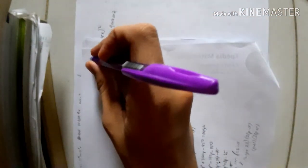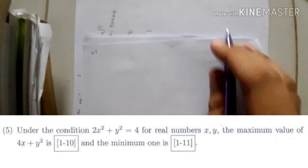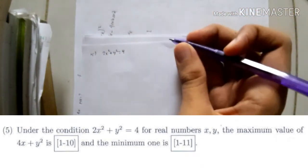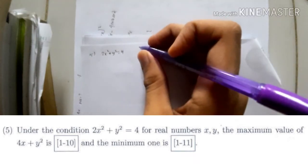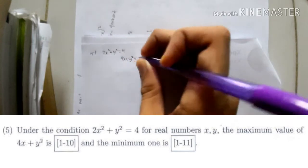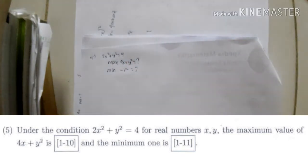We ended on number four in the last video, and we're going to number five of Mathematics A 2016. Number five is about the maximum function: under the condition of 2x² + y² = 4 for real numbers x, y, the maximum value of 4x + y² is what — and the minimum value is also asked.